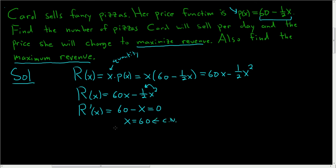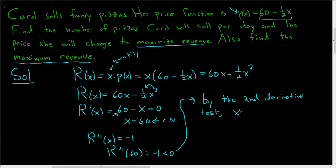Now we have to verify that this indeed is going to maximize Carol's revenue. So we'll take the second derivative. The derivative of 60 is 0. The derivative of negative x is negative 1, and if you look at the second derivative at 60, it's still negative 1. That's less than 0. So this means by the second derivative test, x = 60 maximizes the revenue.